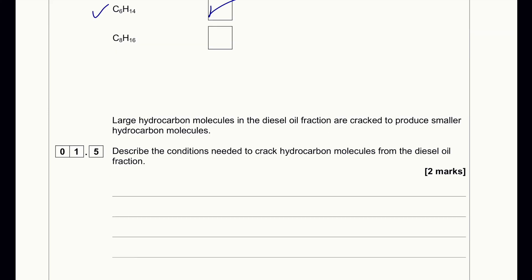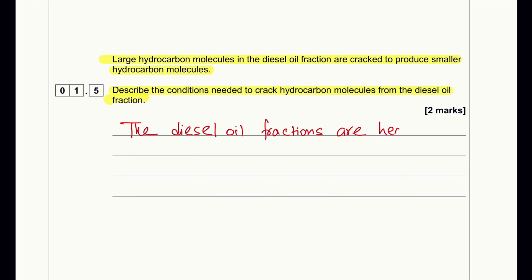Large hydrocarbon molecules in the diesel fraction are cracked to produce smaller hydrocarbon molecules. Describe the conditions needed to crack hydrocarbon molecules from the diesel oil fraction. The diesel oil fractions are heated to high temperature and cracked using catalysts like aluminium oxide.